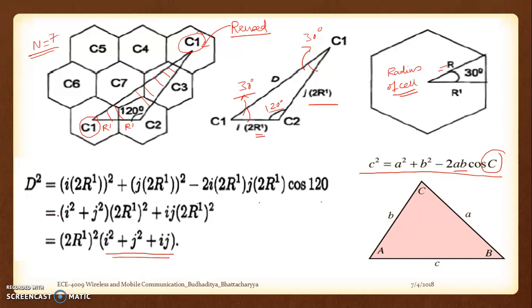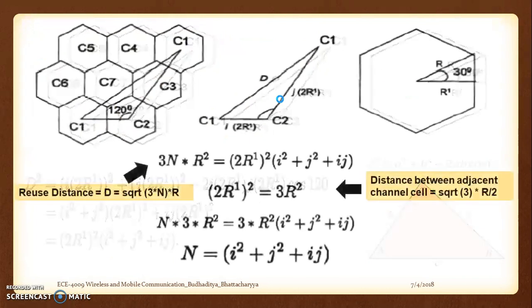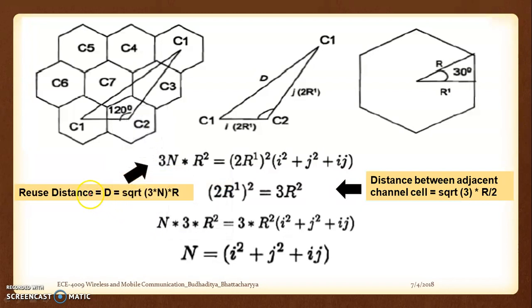The first important distance is d. Since c1 is the first cell and is repeated at another location, d represents the reuse distance — the distance between co-channel cells. This is given by d = √(3n) · r. This comes from the geometry, and since d² = 3n · r². We want to relate r with r1, because we need to cancel terms — we already have n on the left and i² + ij + j² on the right.